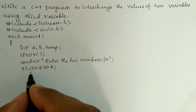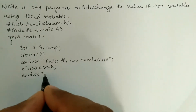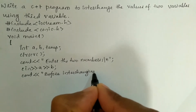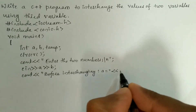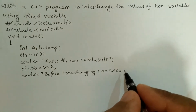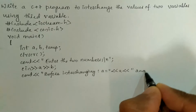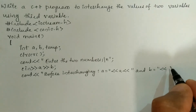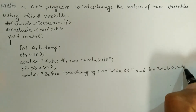Now we are going to print the values before interchanging using a cout statement. In double quotation marks we write "before interchanging a is equal to", then the stream insertion operator followed by the variable a. Then another stream insertion operator, and in double quotation marks we provide a space and write "and b is equal to", followed by the stream insertion operator and variable b.